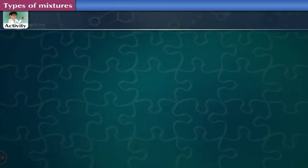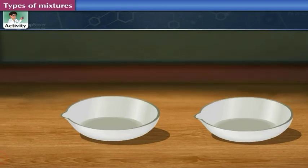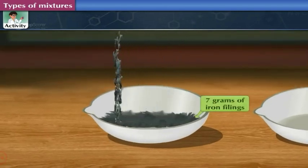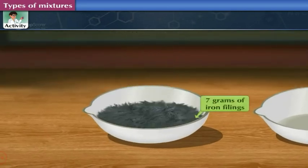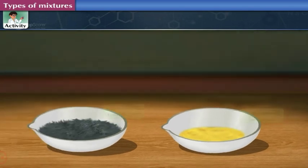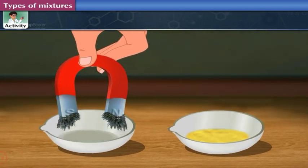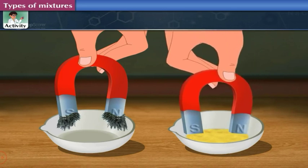Activity: Take two evaporating dishes. Take seven grams of iron filings in one dish and four grams of sulfur in the other dish. Now bring a horseshoe magnet near the iron filings first and then near the sulfur powder. What do you observe?